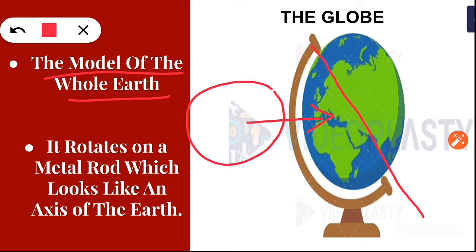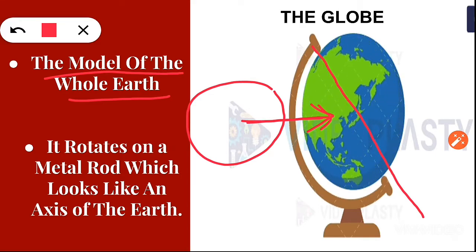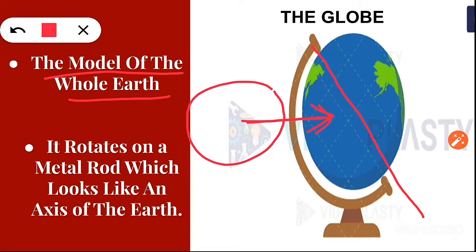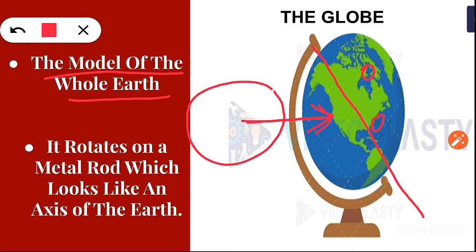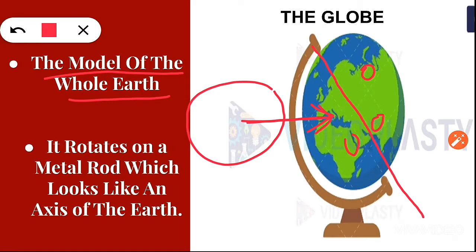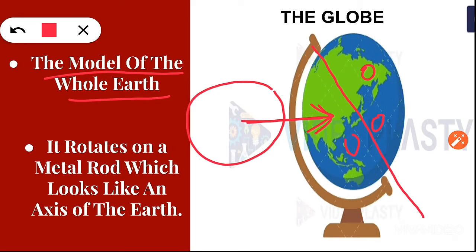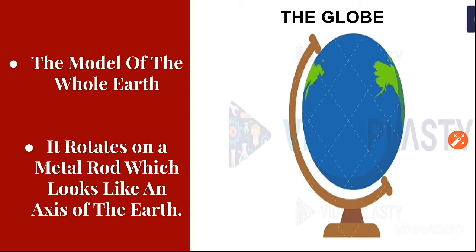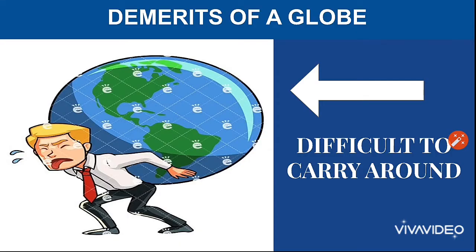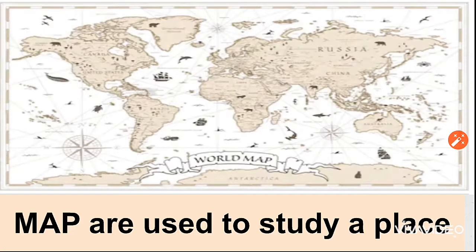Like I just said, you can see the entire earth on the globe, but it is not possible to show all the places on the globe. Only a very big globe can show all the places, but it will be very difficult to carry that globe around. Thus, the geographers came up with a solution and the solution was map.